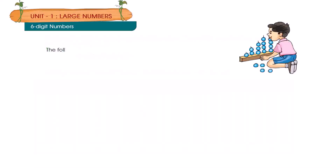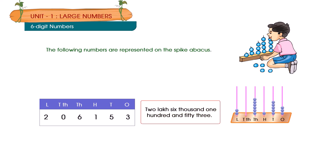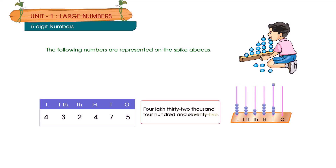The following numbers are represented on the spike abacus. Two lakhs, six thousand, one hundred and fifty-three. Four lakhs, thirty-two thousand, four hundred and seventy-five.